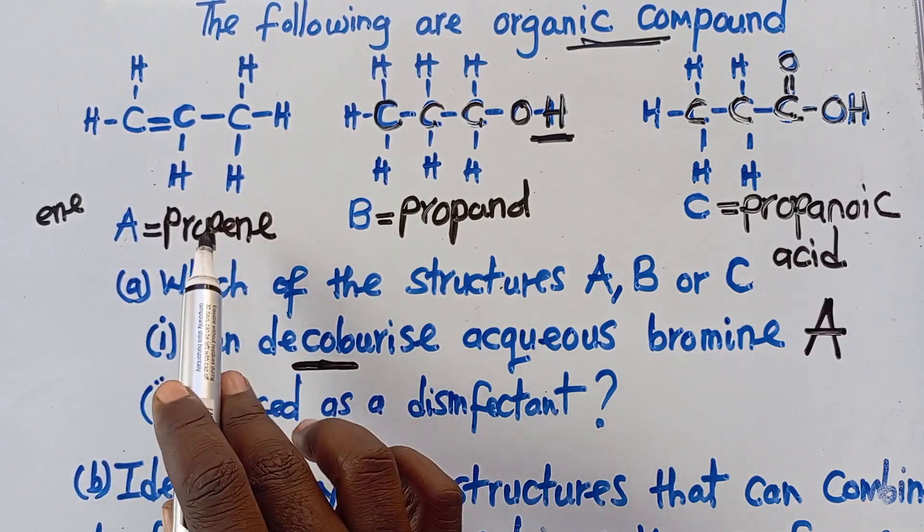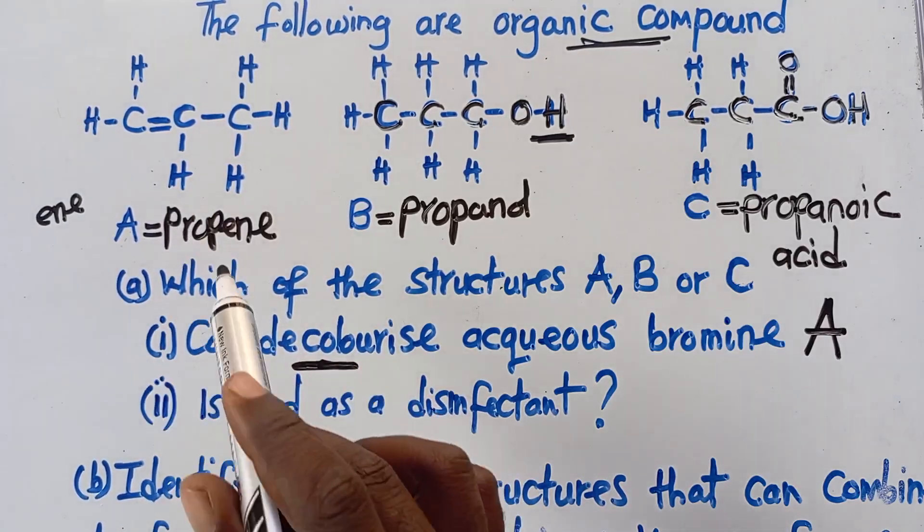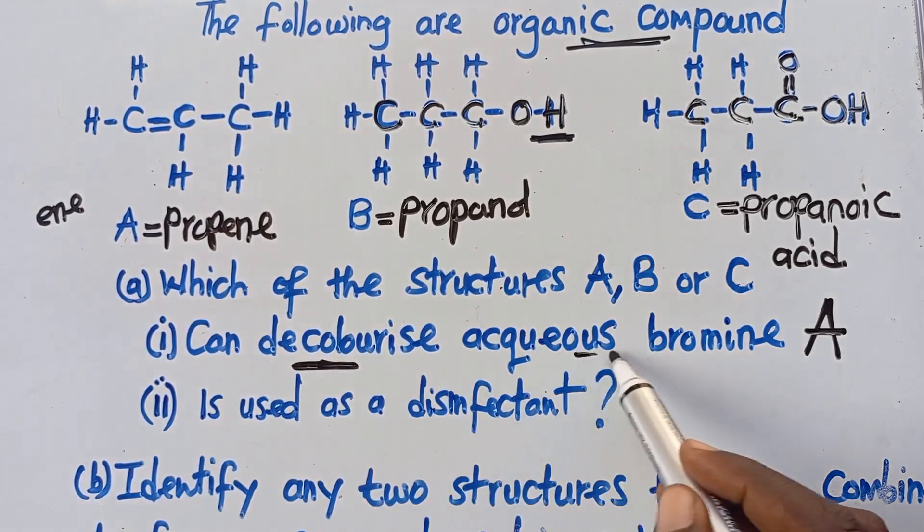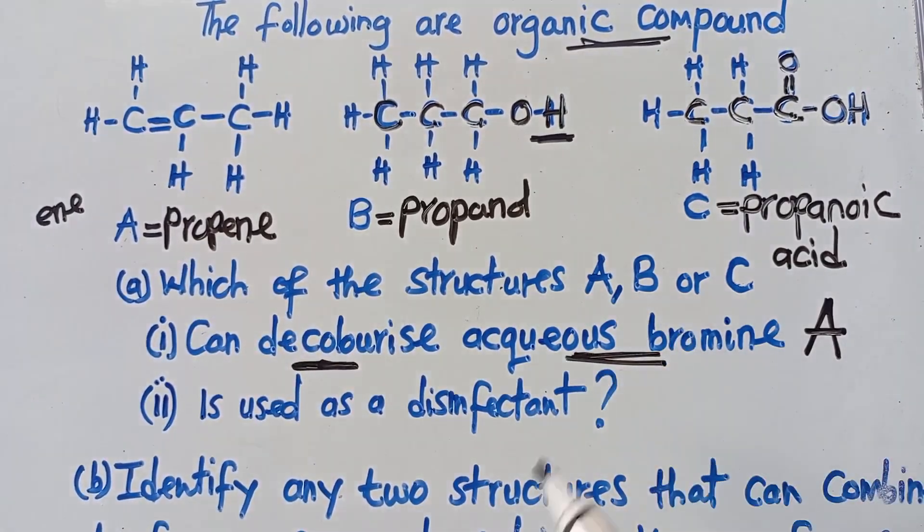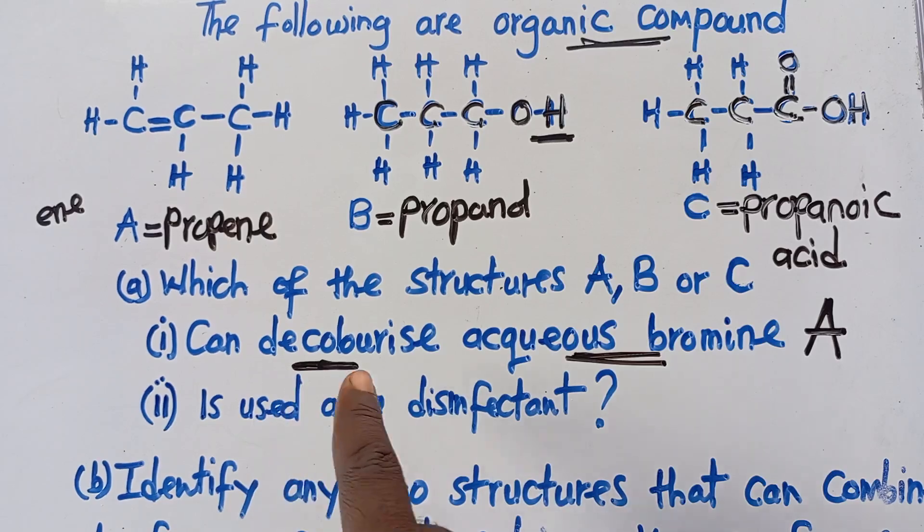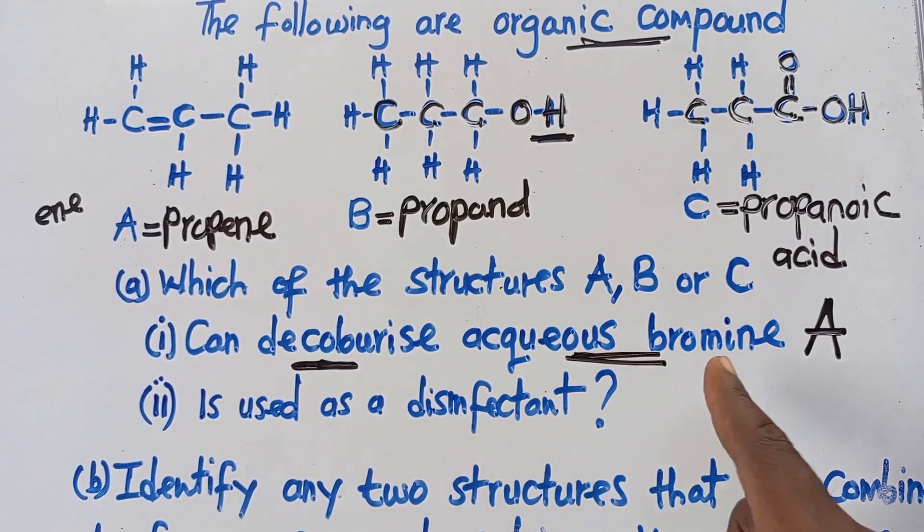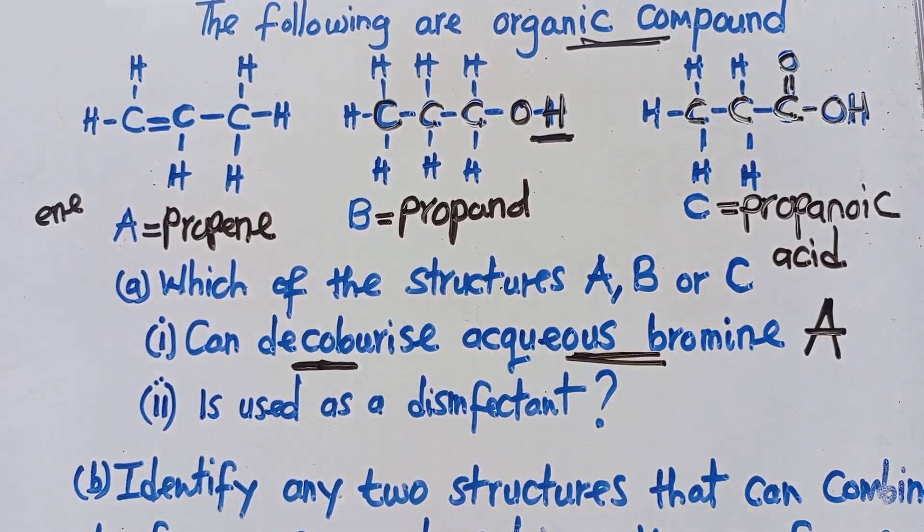So this is propene. So when you put propene in aqueous bromine, this aqueous bromine, which is reddish brown, is going to change from its reddish brown to a colorless solution. So meaning, it is going to decolorize aqueous bromine. As simple as that.